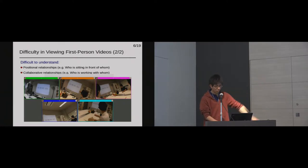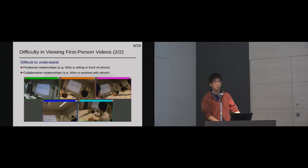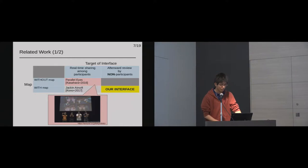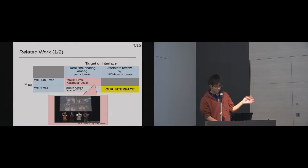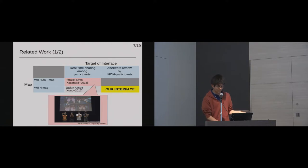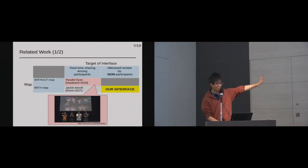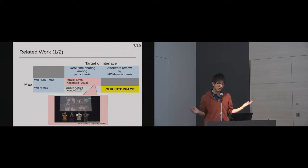It is also difficult to understand the collaborative relationship of workers, such as who is working with whom. As a previous interface to browse these multiple first-person videos, recent studies have developed immersive and real-time view-sharing systems. For example, in Parallel Eyes, participants can share all the other participants' first-person videos and points of gaze. However, this interface has no map view to grasp other participants' locations, so it is still challenging to grasp the location of multiple workers.